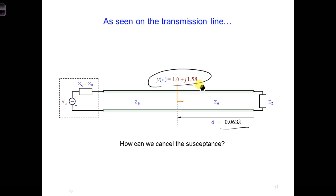Now, we want to cancel this positive J 1.58. Do we want to use an inductor or a capacitor to cancel this J 1.58 value?